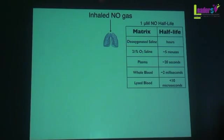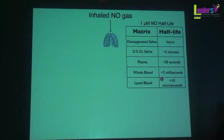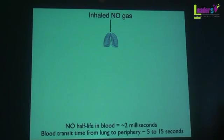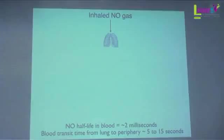Nitric oxide is surprisingly unreactive in oxygenated saline. Just in the presence of oxygen, it has a half-life of about five minutes. In plasma, that drops down to about 20 seconds. In whole blood, it's down to about two milliseconds. Blood and hemoglobin very rapidly scavenges nitric oxide. So because it takes blood about five to fifteen seconds to get from the lung to the rest of the body, any inhaled nitric oxide is probably only going to affect the lung.